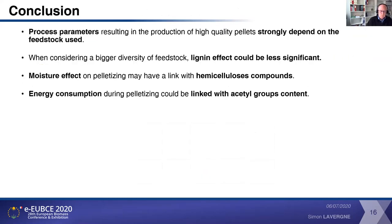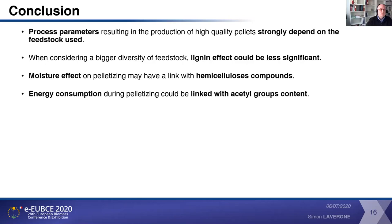So now the conclusions. We saw that the process parameters resulting in the production of high-quality pellets were strongly dependent on the feedstock used. So that's why it's still very important that industry has to correctly set their pelletizing mill in order to produce high-durability pellets. But something important is that it's possible from this diversity of 22 biomasses that we studied to produce high-durability pellets with high density. The second was to show that with our study, the lignin effect was not as important as it is shown in the literature. Then the moisture effects on the pelletizing may be linked with hemicellulose compounds.